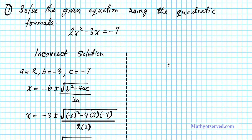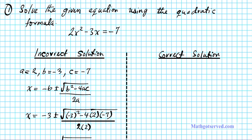Now let's go over the correct solution. First thing you want to keep in mind when solving quadratic equations using the quadratic formula is the form you're working with — do you have it in standard form? Error number one is the form. You notice when I was looking for a, b, and c in the incorrect solution, the equation is not yet in standard form, so that results in an inaccurate c.